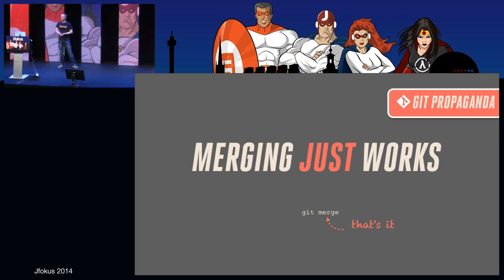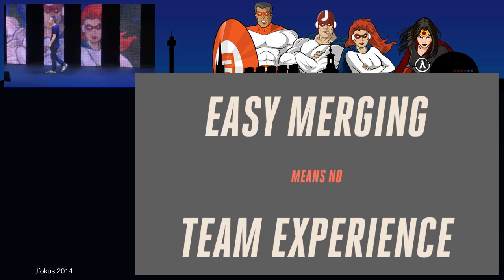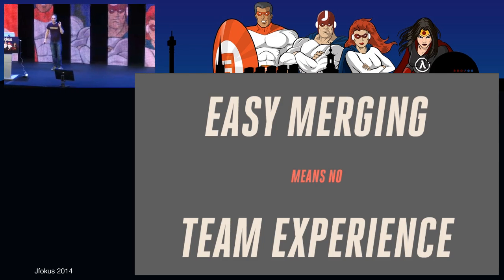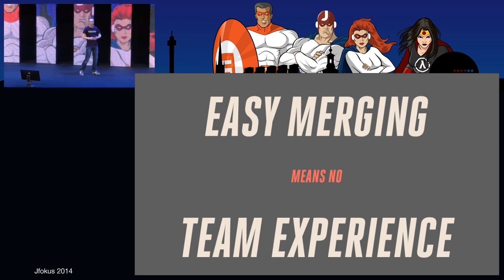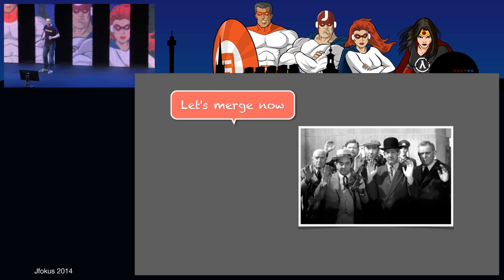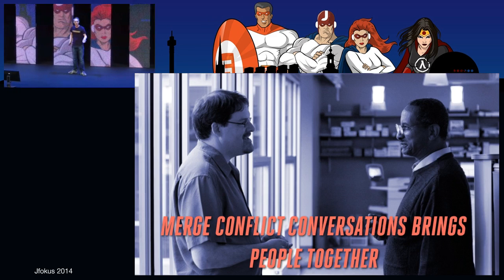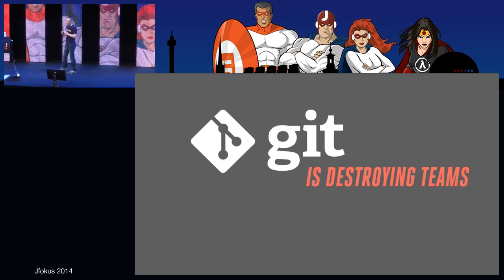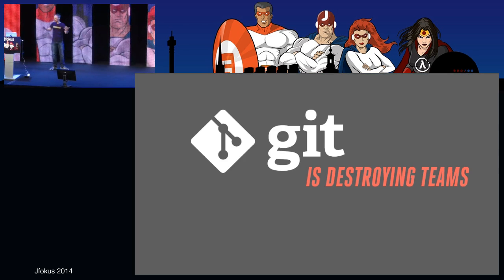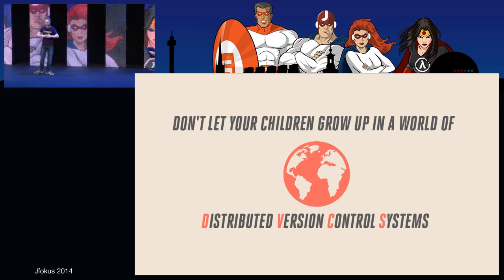The last argument: easy merging. This is what the Git propaganda tells us — merging is easy, it just works, just 'git merge,' that's it. But you know what that means? Where's the team experience when you merge? When we had a long-running branch in Subversion and had to merge it back into trunk, everybody would commit their code, then it was hands off the keyboard while we merged. We had a lot of conflicts — but those conflicts got us into discussions about the code: 'why did you change that?' Git merge just works, so really, don't use Git. Git is destroying teams and the whole team experience.